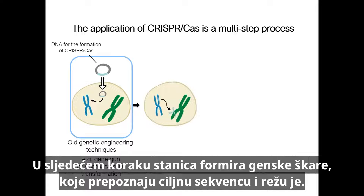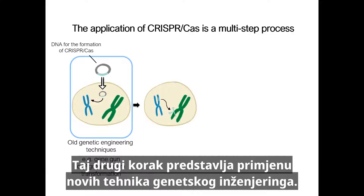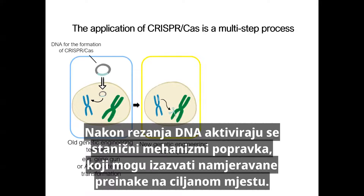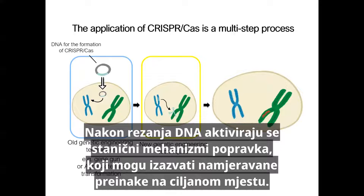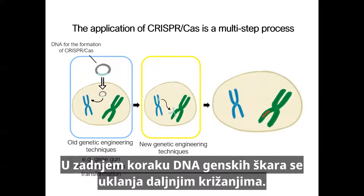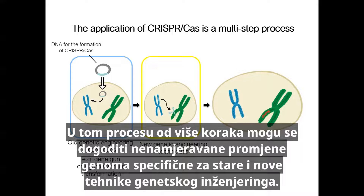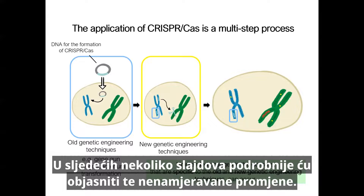In the next step, the cell forms the gene scissors which recognize the target sequence and cut it. This second step is the application of the new genetic engineering techniques. After cutting the DNA, the cell's own repair mechanisms are activated, which can then induce the intended alterations at the target site. In the last step, the gene scissors DNA is segregated by further breeding steps. In this multi-step process, unintended changes in the genome specific to the old and new genetic engineering techniques can occur.